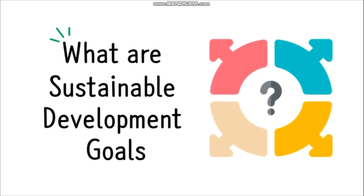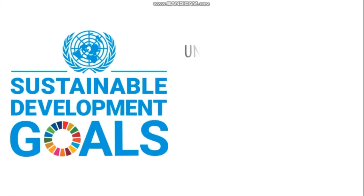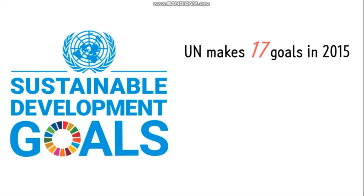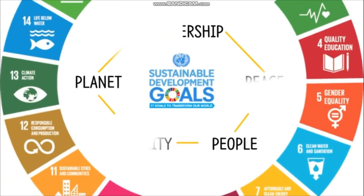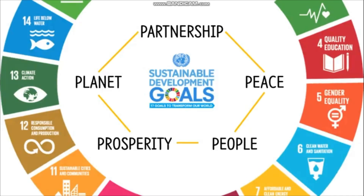Then, what are Sustainable Development Goals? The United Nations made 17 Global Goals in 2015, and it will end in 2030. This major goal is based on the trust: leave no one behind. Also, SDGs are classified into 5 values: Partnership, Planet, Peace, Prosperity, and People. So, let's look at each global goal.